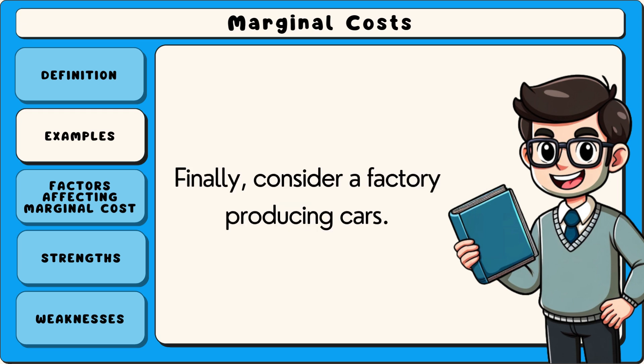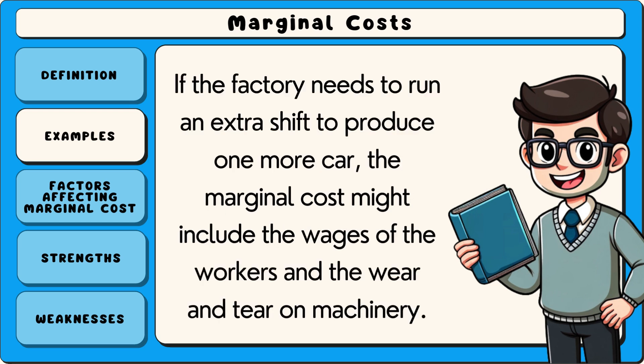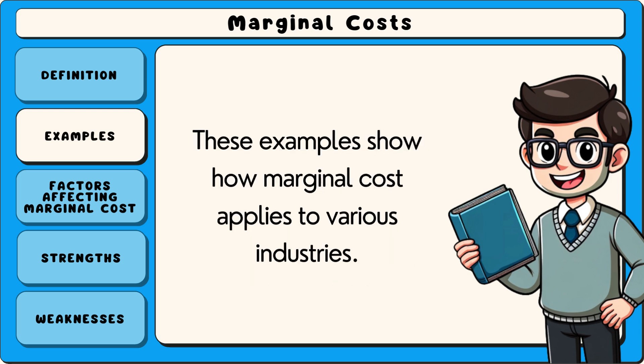Finally, consider a factory producing cars. If the factory needs to run an extra shift to produce one more car, the marginal cost might include the wages of the workers and the wear and tear on machinery. These examples show how marginal cost applies to various industries.